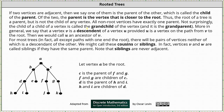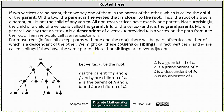The child of a child of a vertex is called the grandchild of the vertex, which is the grandparent. More in general, we say that a vertex v is a descendant of a vertex u, provided u is a vertex on the path from v to the root, and we call u an ancestor of v. Going back to our tree, notice k is the child of the child of c. This indicates that k is a grandchild of c, and c is a grandparent of k. Also notice i is the child of the child of b, indicating that i is a grandchild of b, and b is a grandparent of i.